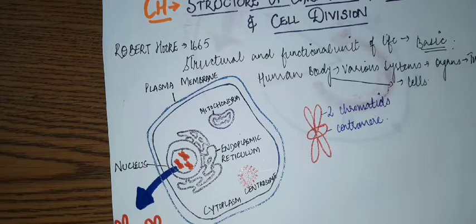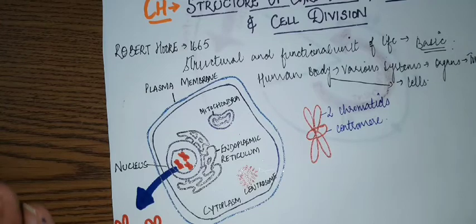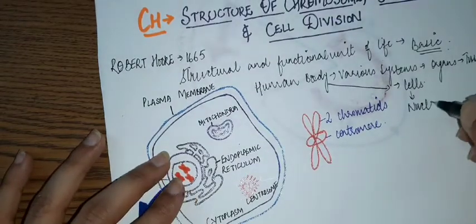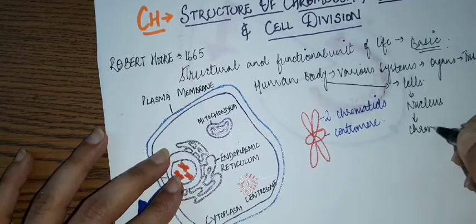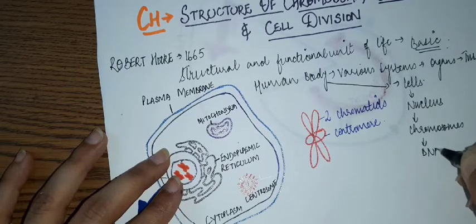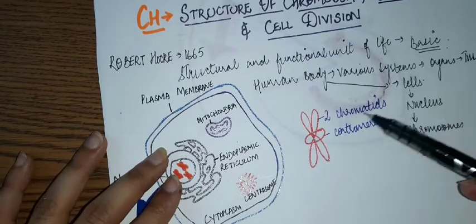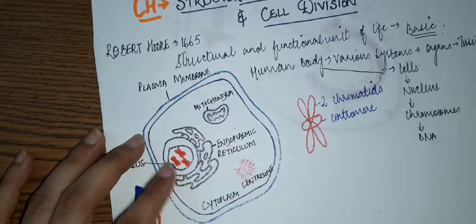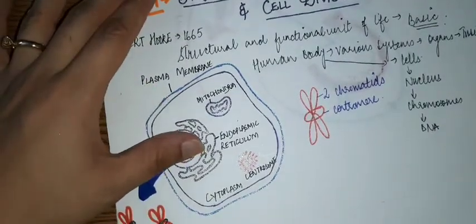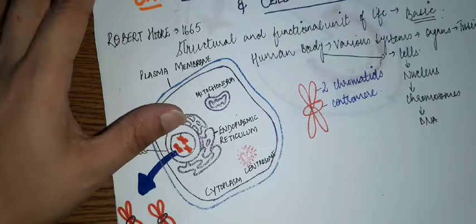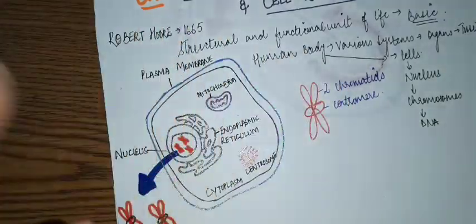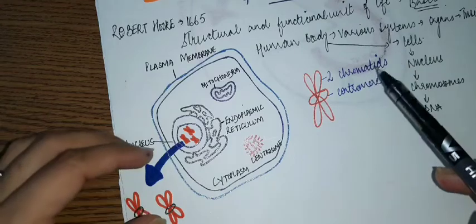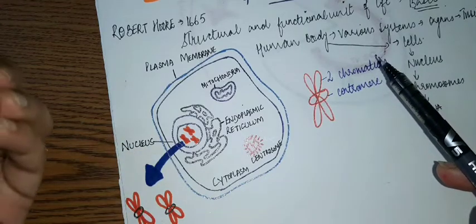We have studied that the cell is the basic structural and functional unit of all living organisms. These cells have a nucleus, and in the nucleus we have chromosomes and the genetic material DNA. Now, the DNA strands are so long that without coiling they cannot be accommodated inside the body. So to accommodate them and coil them, the DNA is coiled onto chromosomes.